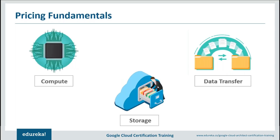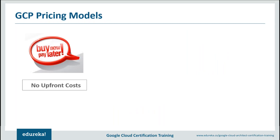GCP takes care of all these points and based on them has built various models that let you choose and plan your cloud services very nicely. Firstly, we have no upfront costs. GCP provides you with a free tier and charges no upfront costs whatsoever — you pay only for those services which you are using, and that too after you have used them.